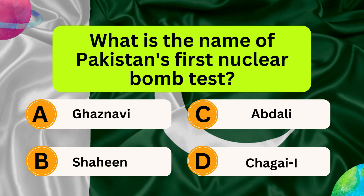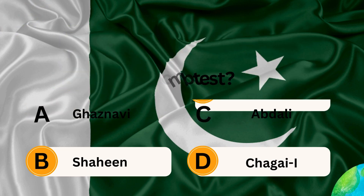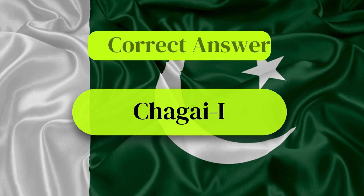What is the name of Pakistan's first nuclear bomb test? Options: Rajanavi, Abdali, Shaheen, Chagai-1. Correct answer is Chagai-1.